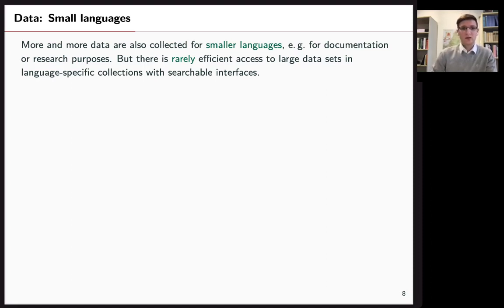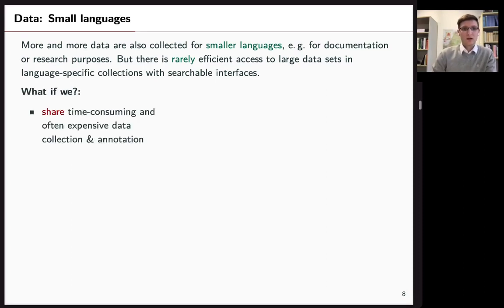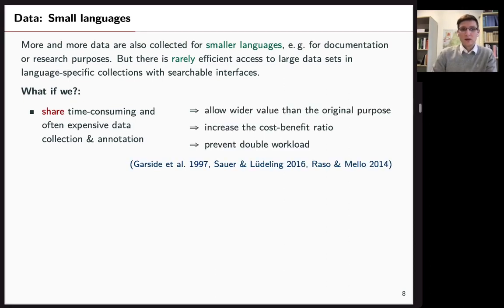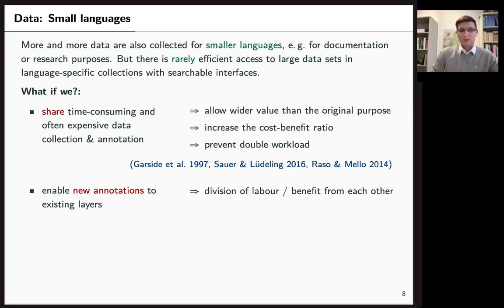We rarely see efficient access to collections with searchable interfaces. But there would be so many benefits from this. So what if we share time consuming and often expensive data collections and annotations? Well we get a wider value for what we have done and let people use it for other purposes. The cost benefit ratio would increase because we don't have to do the same work over and over again if someone else has already done it. And by enabling other people to add annotations to our data we would benefit all from each other. So I think we don't have to do everything all by ourselves.